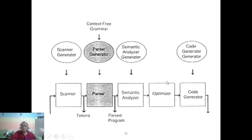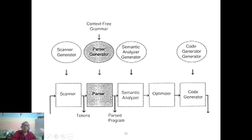Another way to look at it: some books say 'scanner', some say 'scanner generator', some say 'lexical analysis' — ultimately 'token' is the key output. Tokens go to the symbol table and as a series of tokens to the parser, which produces an abstract syntax tree.